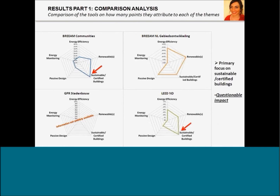This is another comparison of the tools — not a comparison with the generic list, but a comparison of the tools with each other. It is based on the value that the tools reward on different themes, depending on how many points the tools award an area for fulfilling a criterion. You can see from this diagram that BREEAM Communities and LEED for Neighborhood Development give primary focus — meaning they reward more points — to areas that include sustainably certified buildings, rather than, for example, incorporating renewable energy or improving energy efficiency. BREEAM NL Gebiedsontwikkeling has a more holistic approach, distributing the points more evenly between the different themes, which is preferable.